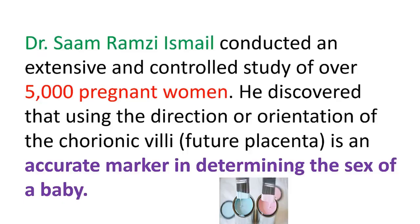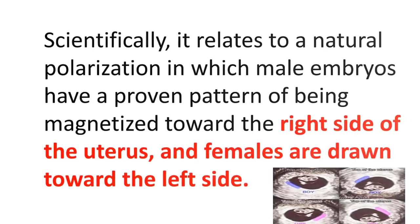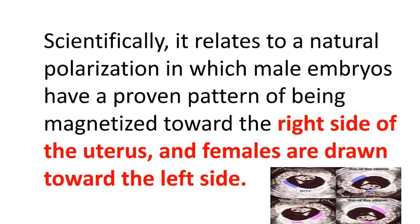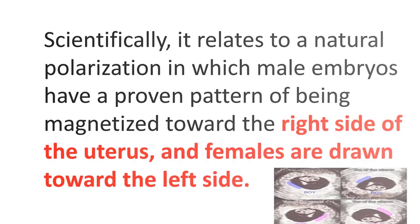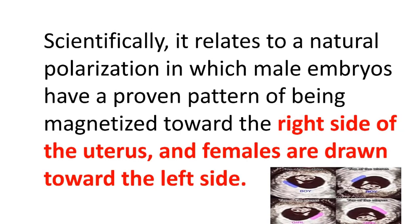Dr. Sam Ramsey conducted an extensive and controlled study over 5,000 pregnant women. He discovered that using the location or the direction of chorionic villi — that are the future placenta — is an accurate marker in determining the sex of a baby. Scientifically, it relates to a natural polarization in which male embryos have a proven pattern of being magnetized toward the right side of the uterus, and females are drawn toward the left side.